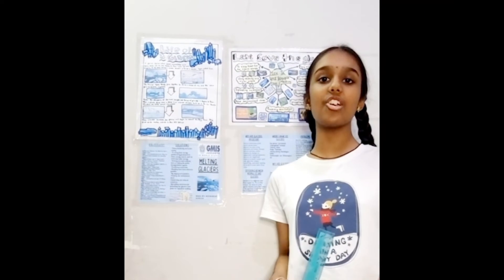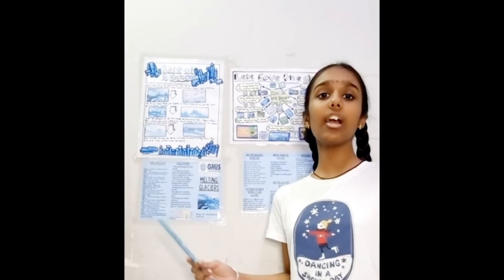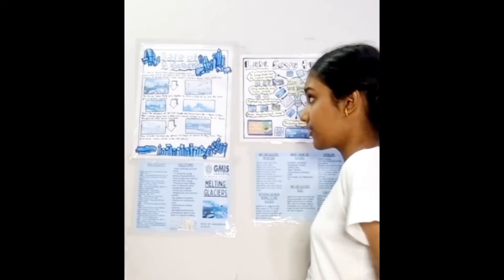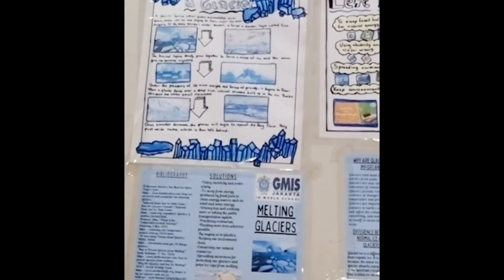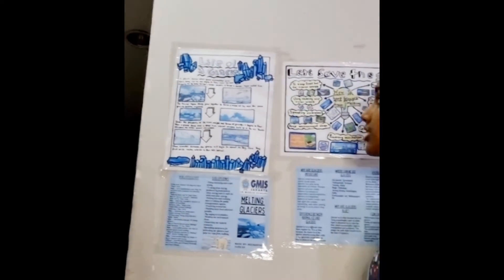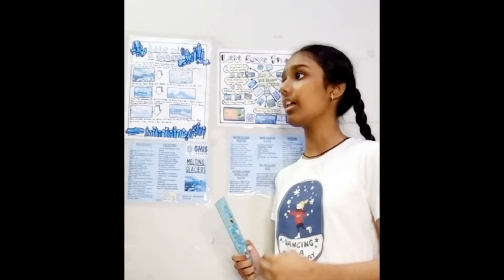I would like to start by saying: I am not interested in changing the world; I am interested in changing minds, because only if people are ready to listen can we make a true difference. My topic for my Grade exhibition is glaciers melting. What are glaciers? A glacier is formed when snowfall over time turns into ice and begins to flow under its own pressure. If snow survives one winter season, it forms a denser layer called firn. The buried layers slowly grow together to form a mass of ice, and the ice grains become ice crystals under pressure and gravity.